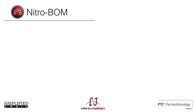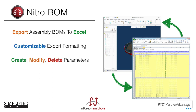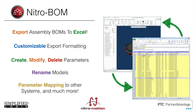NitroBomb is the very first product that we created within the NitroMation series. It was created specifically to export bills and materials to Excel from ProEngineer and Creo. It has customizable export formatting, and you can create, modify, and delete parameters. You can also rename models and do parameter mappings for other exports to other systems, for example, to an ERP system.